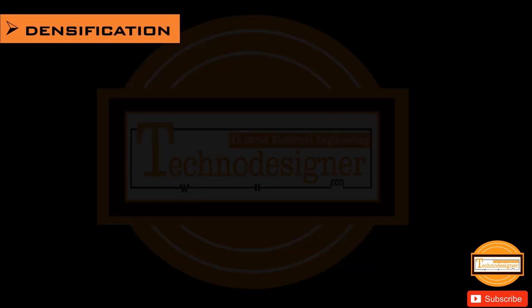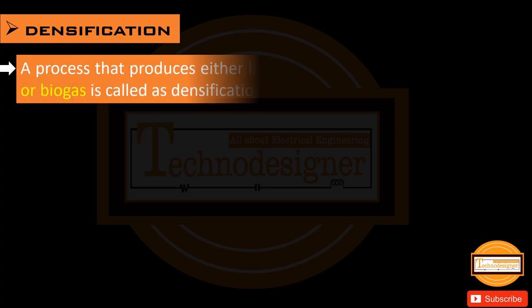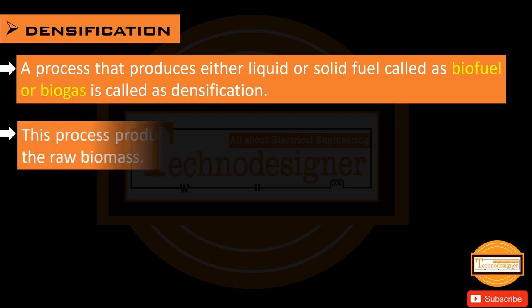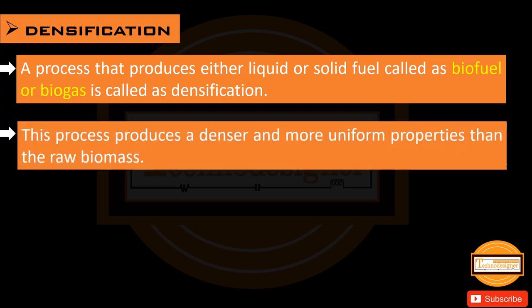Now explaining the densification process: a process that produces either liquid or solid fuel — called biofuel or biogas — is called densification. This process produces a denser and more uniform product than the raw biomass.